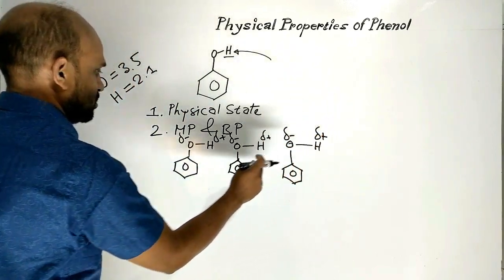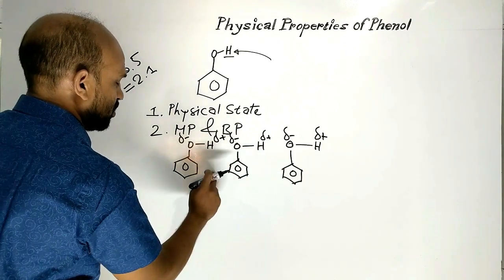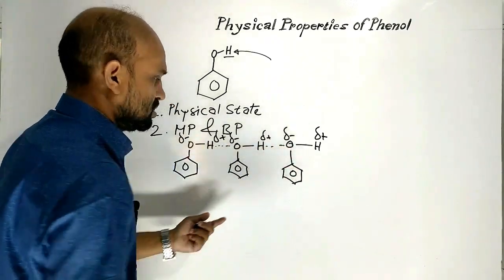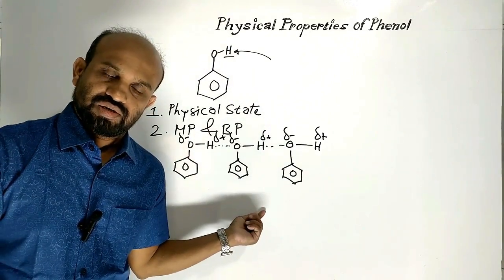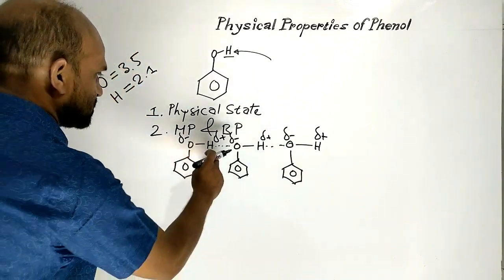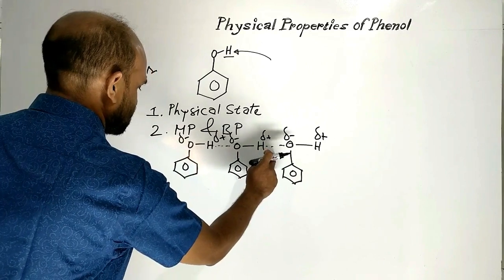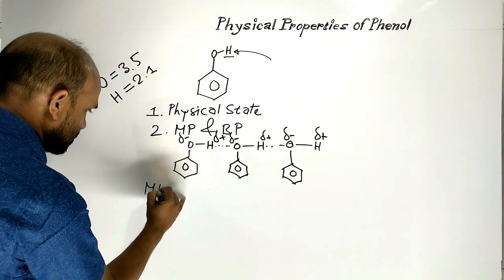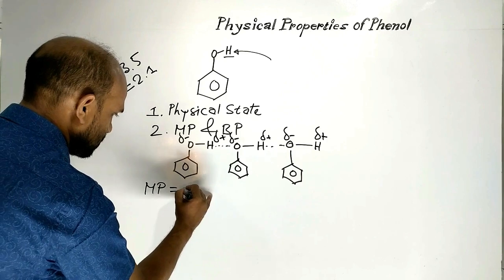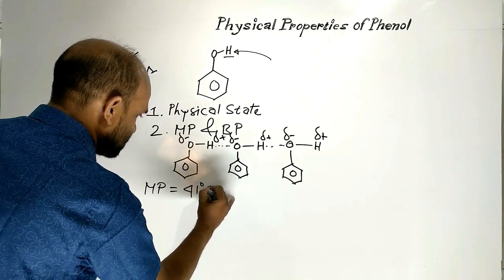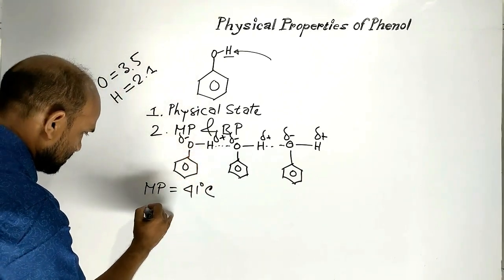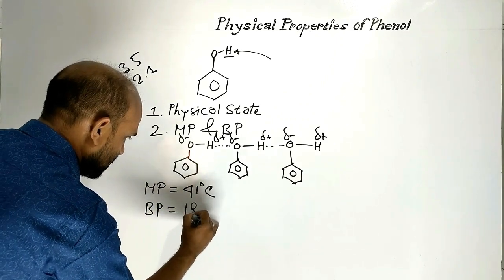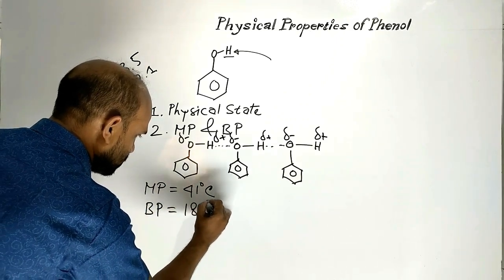So Phenol molecules form hydrogen bonds. Because of these hydrogen bonds, its melting point is 41 degrees Celsius and its boiling point is 182 degrees Celsius.